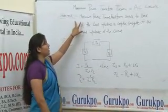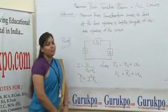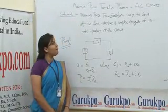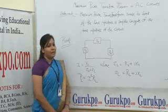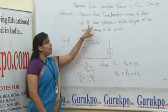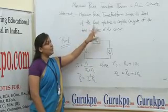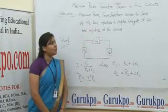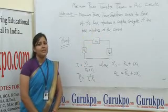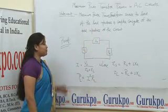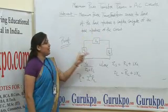According to this theorem, maximum power is transferred from source to load when the load impedance is the complex conjugate of the total impedance of the circuit. To prove it,